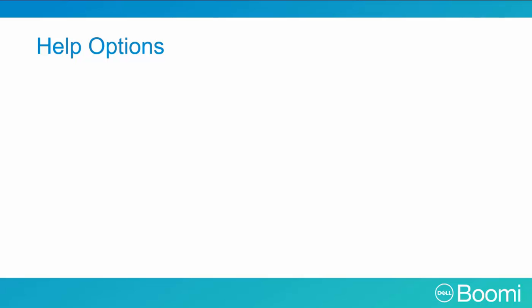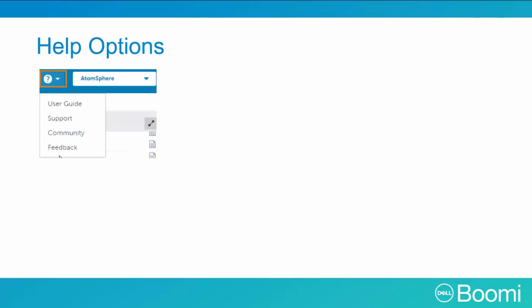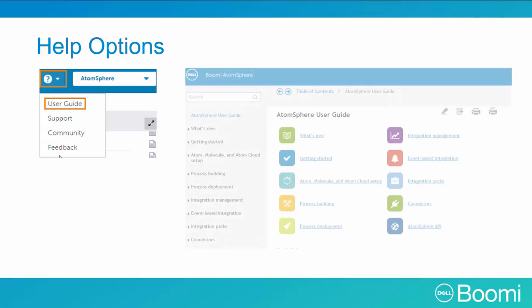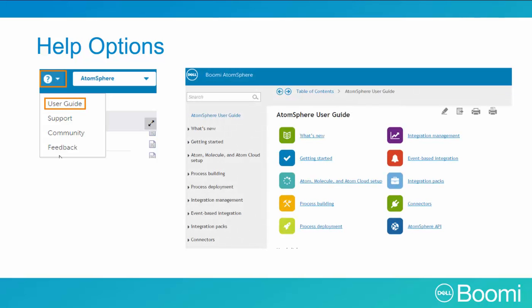Let's look at the wide range of Atmosphere support options. These are available from the Help menu within Atmosphere. First is the User Guide, which offers technical and procedural summaries of the Atmosphere features. If you're curious about how a particular feature or shape works, visit our User Guide.